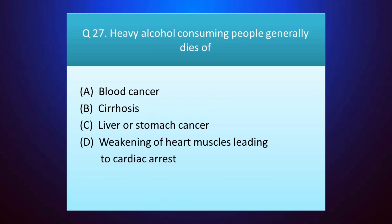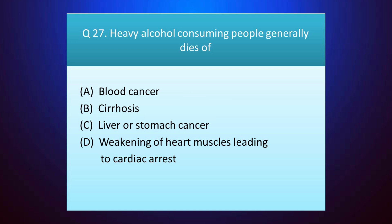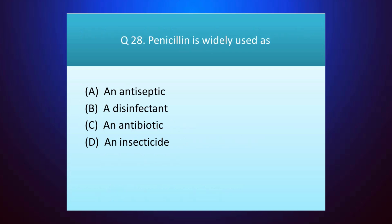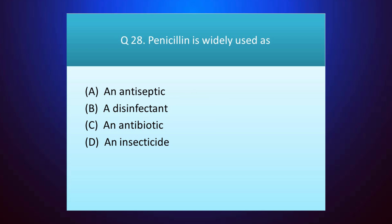Question number twenty-seven: heavy alcohol consuming people generally die from — your time starts. The answer is option C — liver or stomach cancer. Question number twenty-eight: penicillin is widely used as — your time starts. The answer is option C — an antibiotic.